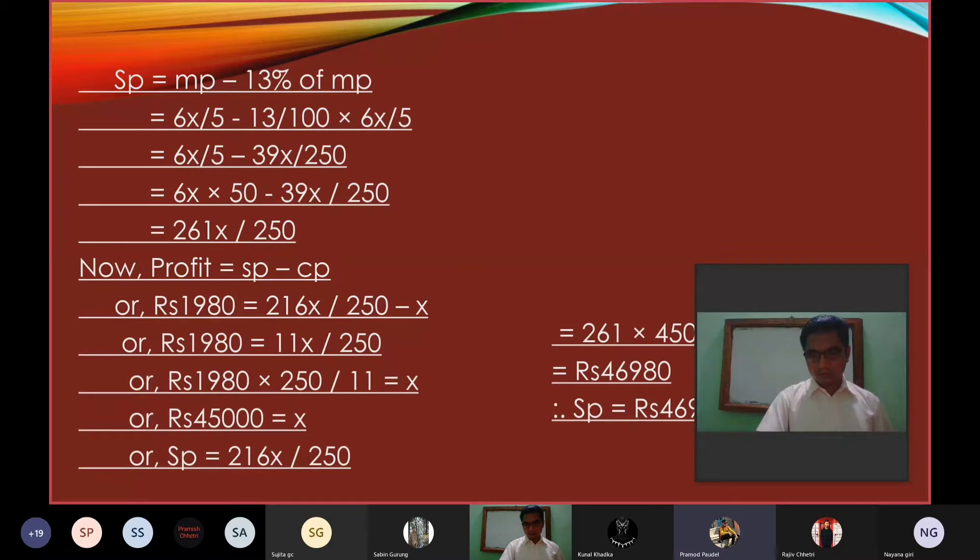Now profit equals SP minus CP. Rs 1,980 equals 261x/250 minus x, or Rs 1,980 equals 11x/250. Rs 1,980 multiplied by 250/11 equals x, or Rs 45,000 equals x.